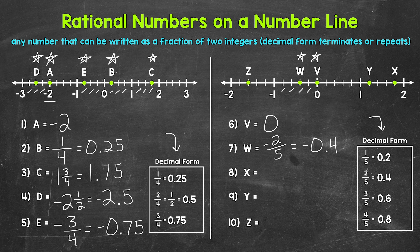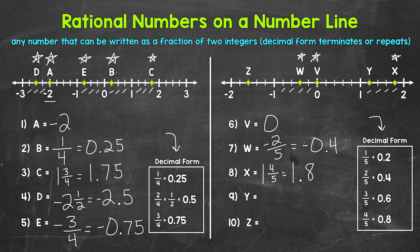Moving on to number eight, we have point X, which is between one and two. We have one and one fifth, one and two fifths, one and three fifths, and then one and four fifths. So point X is at one and four fifths on the number line, which in decimal form is 1.8 — one and eight tenths.